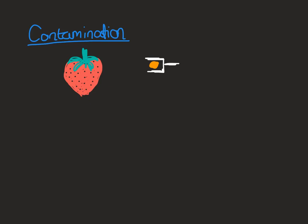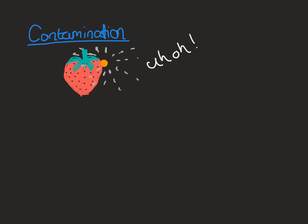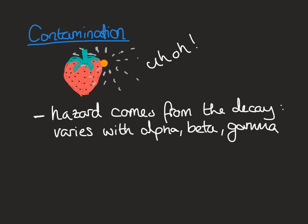But what if someone irradiating the strawberries was being ridiculously silly? Let's think about a terrible, very unlikely what-if scenario. Here I've got my strawberry and my radioactive material. Someone wasn't following any precautions and started moving the source of the radioactive material too close to the strawberry. The radioactive source is now on the strawberry — the strawberry has been contaminated. The hazard from contamination comes from the decay of the radioactive material, and it varies with alpha, beta, and gamma depending on how you've been contaminated and what sort of decay particle you're exposed to.